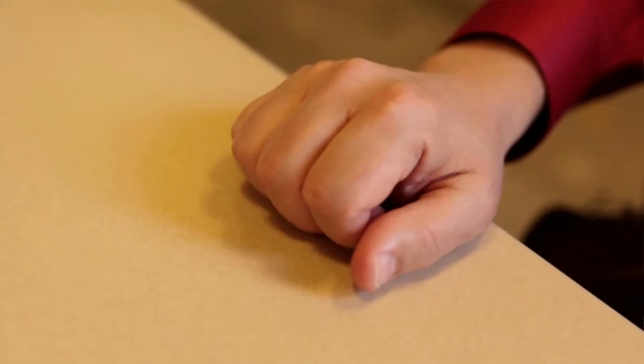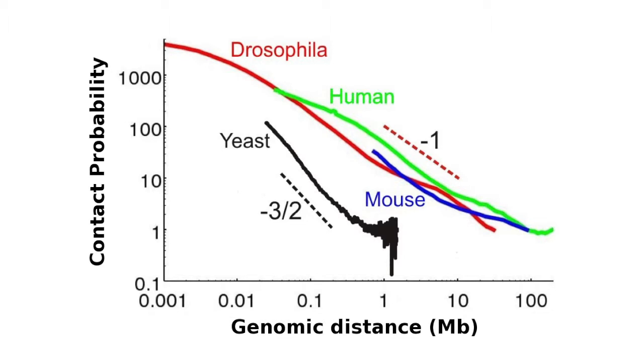A particularly rich set of observations was made using a method called chromosome capture, developed by Job Dekker and his co-workers. In this method, people measure probabilities of different genetic loci in the chromatin being next to each other in three-dimensional space. This is an extremely powerful and rich source of information about chromosome structure.